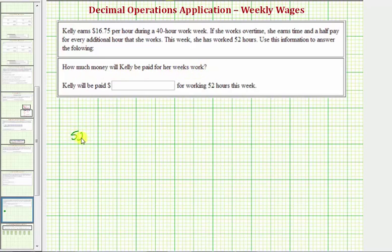We know she worked 52 hours. Of those 52 hours, the first 40 hours is paid at the regular rate of $16.75 per hour. So 40 hours at the regular rate.